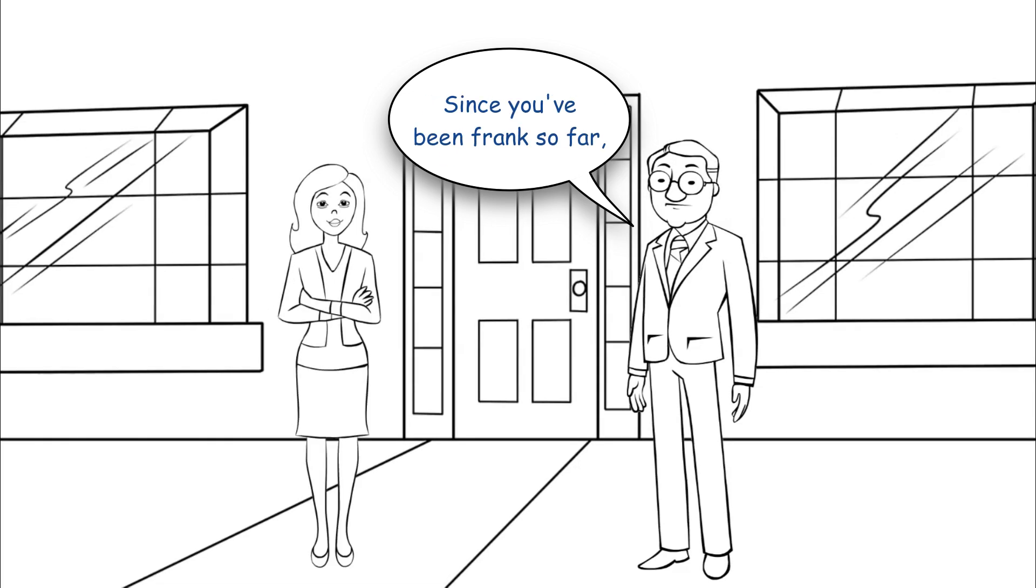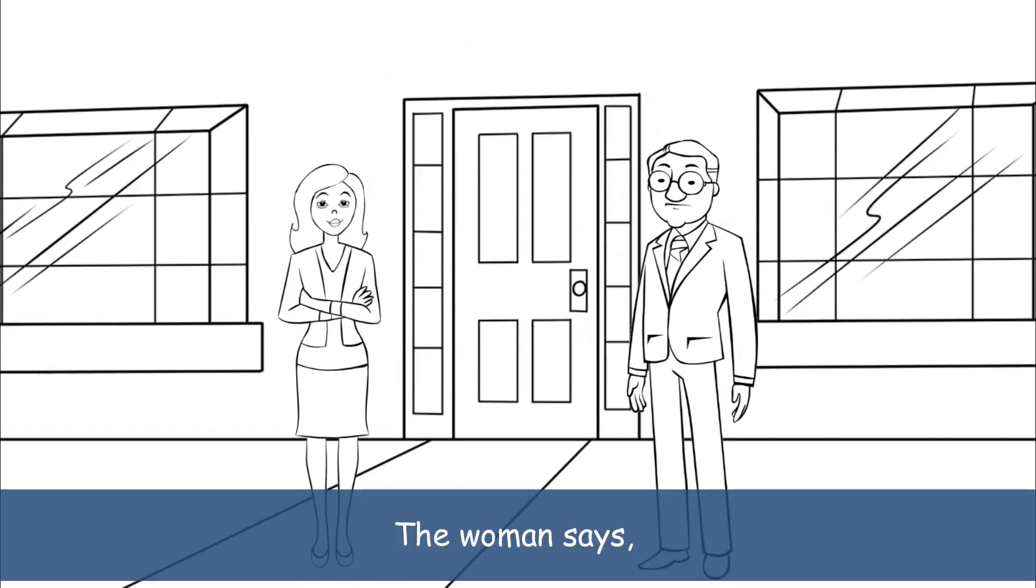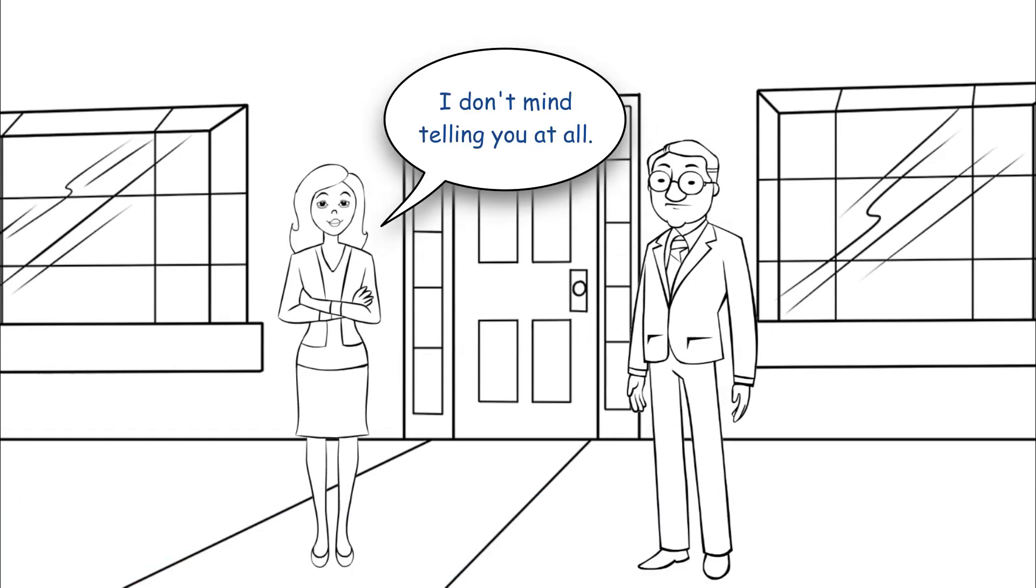"Since you've been frank so far, can you tell me exactly how you use it for sex?" The woman says, "I don't mind telling you at all. My husband and I put it on the doorknob and it keeps the kids out."